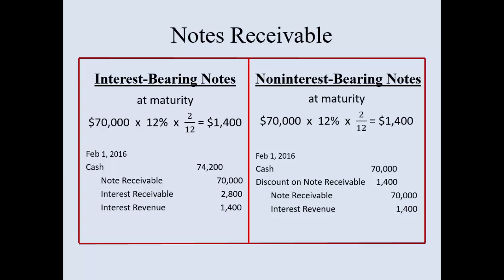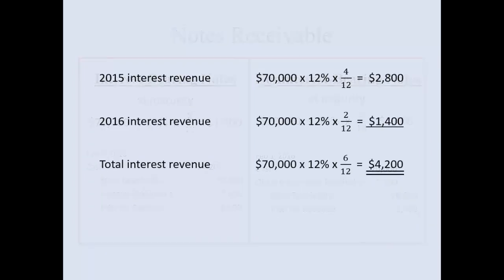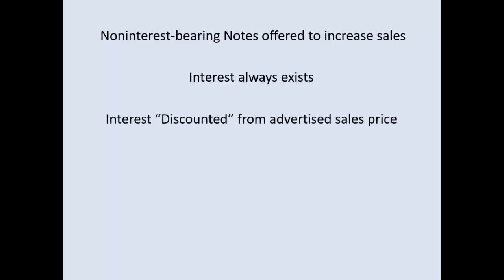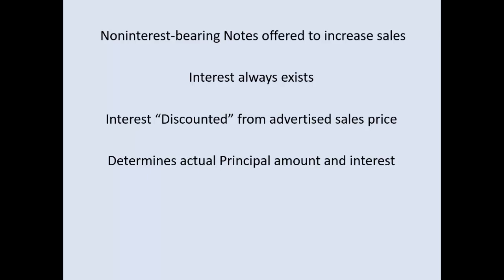You are getting paid more with interest-bearing notes in this example, but in practice a non-interest bearing note usually has a higher sales price because it includes that hidden interest that you don't want your customers to know about. This is just a reconciliation of the revenue. Non-interest bearing notes are offered to increase your sales, but just know that interest will always exist. Interest is discounted from the advertised sales price, and you'll also see interest in non-interest bearing notes payable in another chapter — same thing, you just reverse the entry.